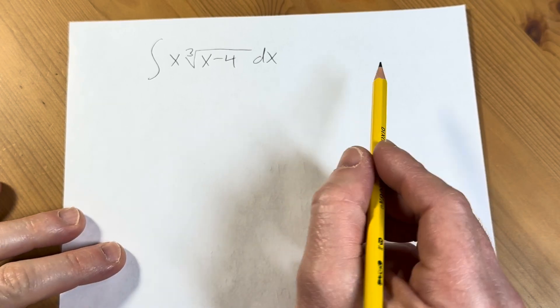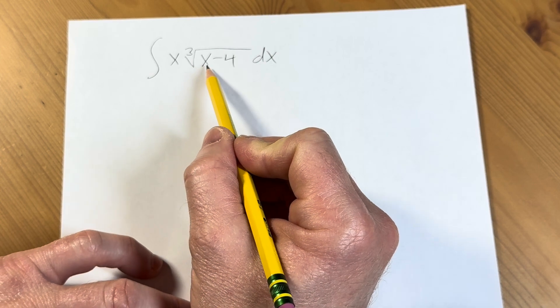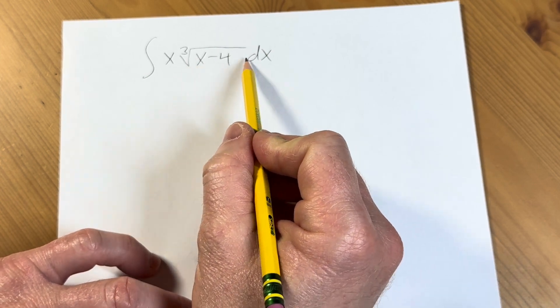Hi, in this video we are going to work out this integral. We have the integral of x times the cube root of x minus 4 with respect to x.